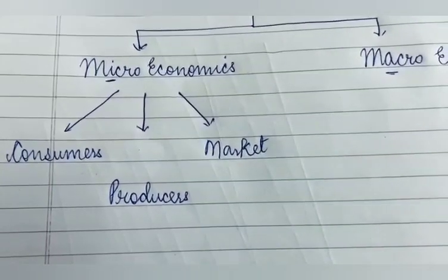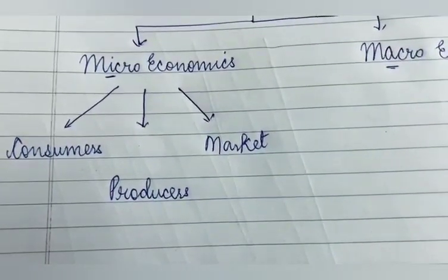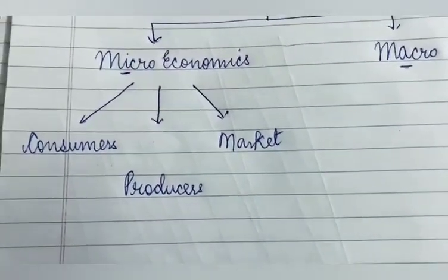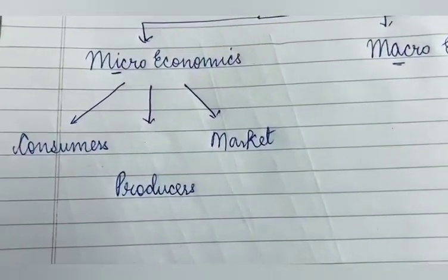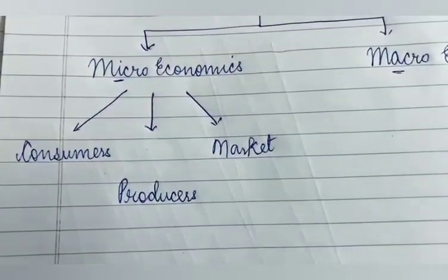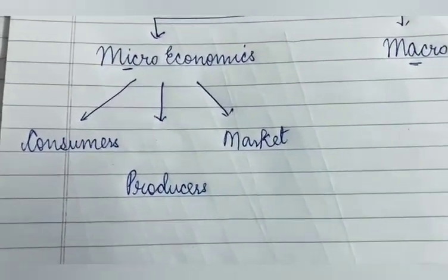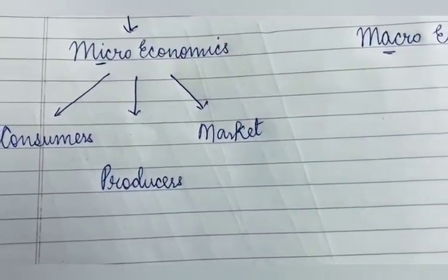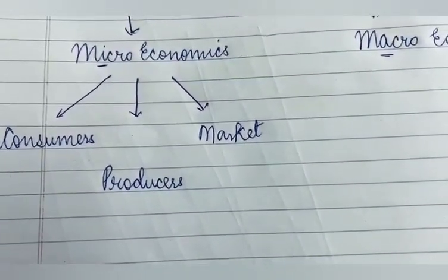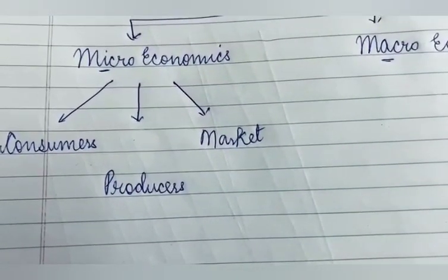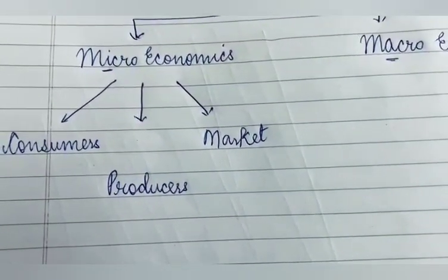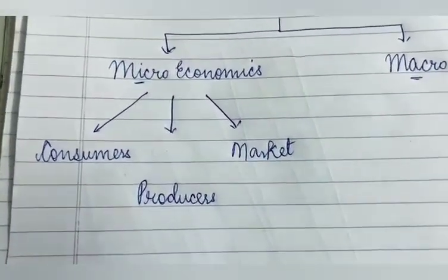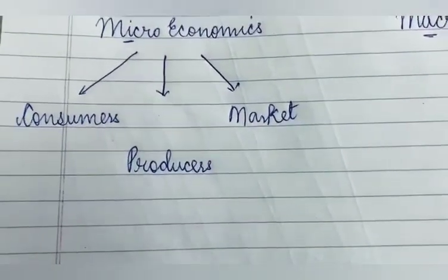Poora microeconomics part ko teen segments mein divide kiya gaya hai. Ek hai consumer — people who consume goods and services. Producer — joh goods produce karte hain for some economic gain, they are producers. And the third one is market — it is a setting or an arrangement where goods are bought and sold.